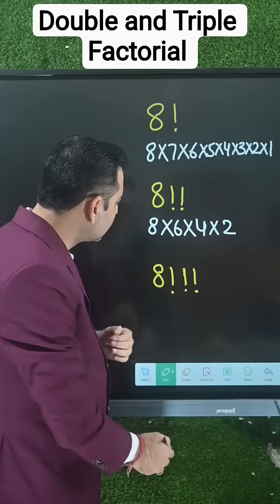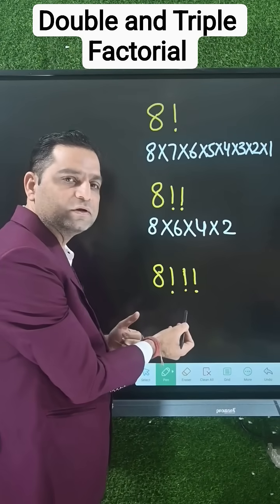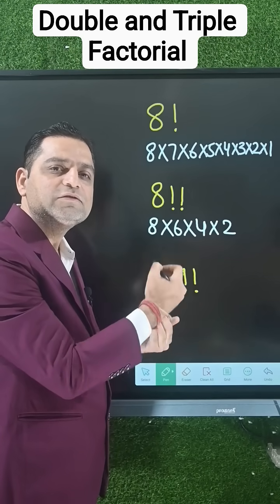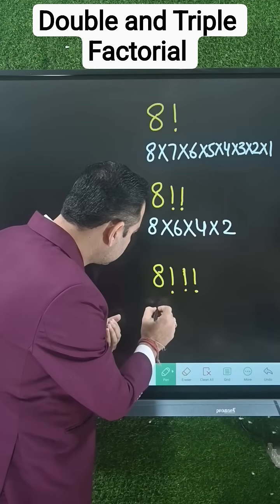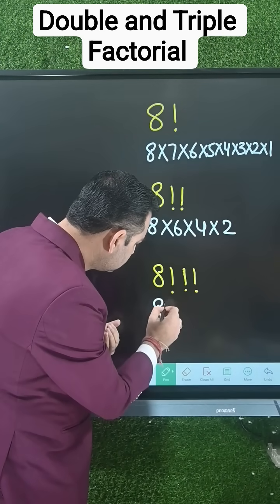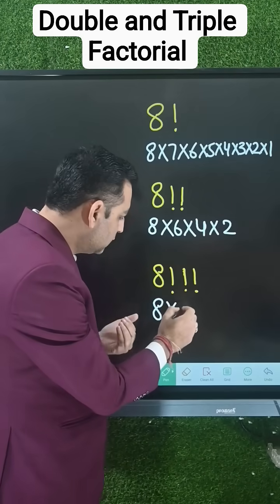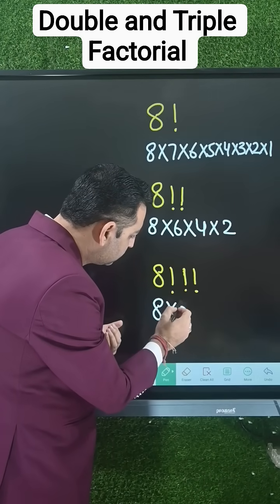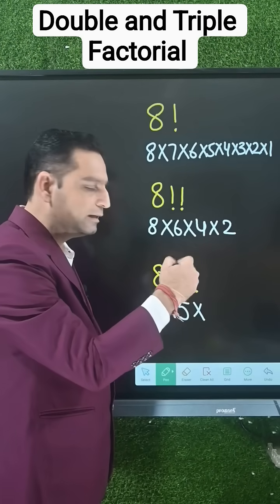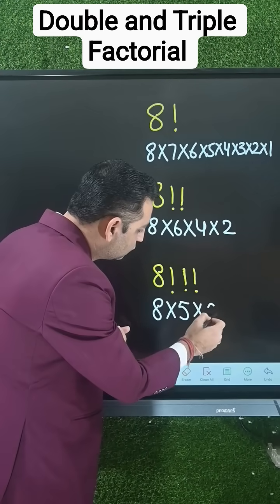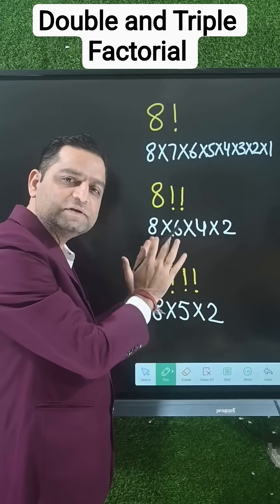For 8 triple factorial, that means you subtract 3 each time. First number is 8, then 8 minus 3 is 5, then 5 minus 3 is 2. So 8!!! = 8×5×2. We end up here — the same rule applies for other factorials.